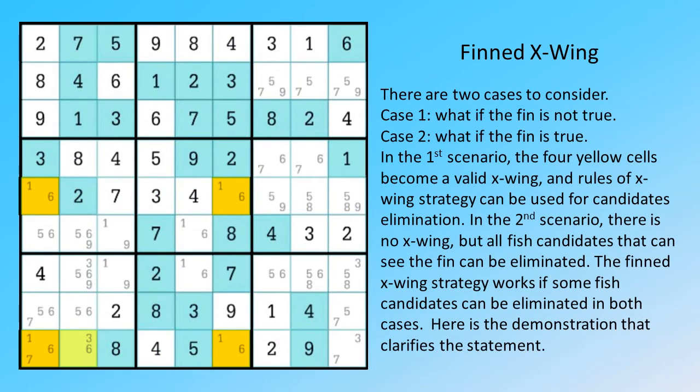There are two cases to consider. Case 1: what if the fin is not true? Case 2: what if the fin is true? In the first scenario, the four yellow cells become a valid X-Wing, and rules of X-Wing strategy can be used for candidates' elimination.